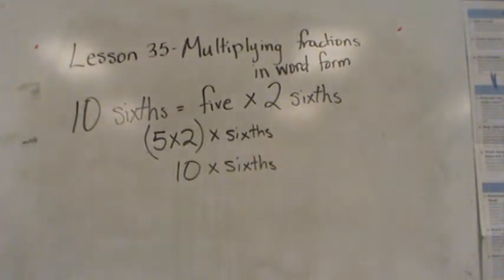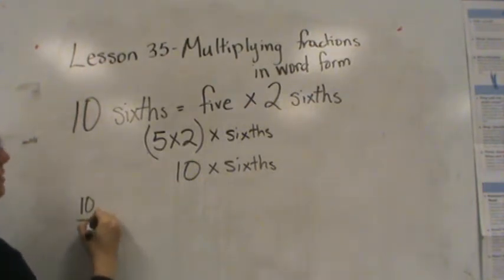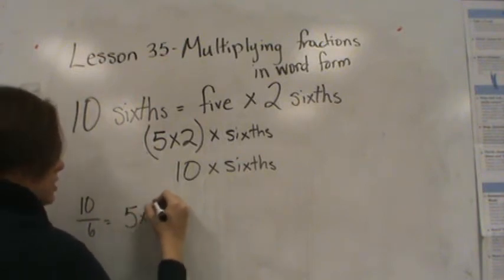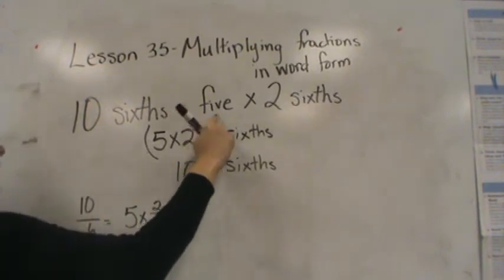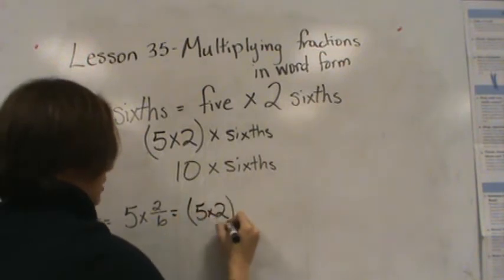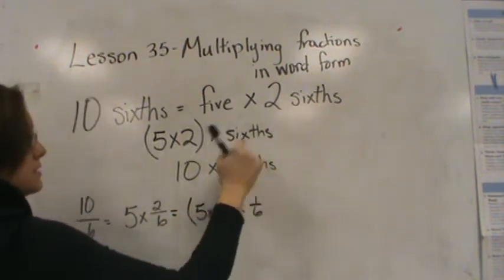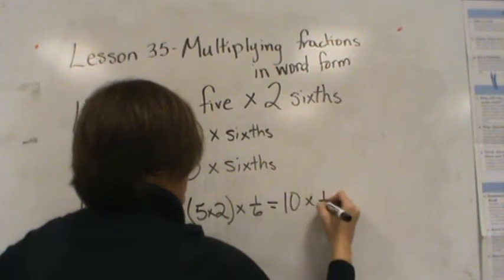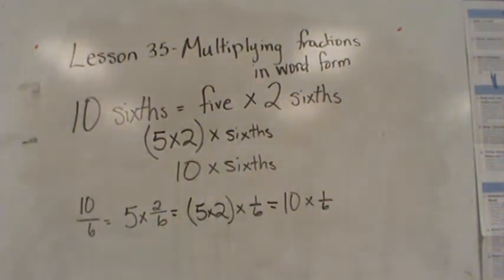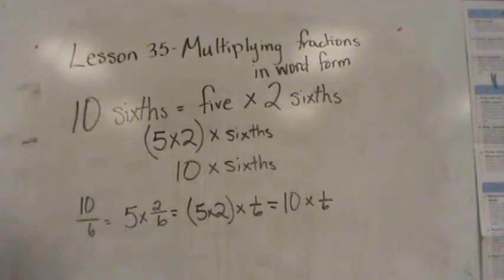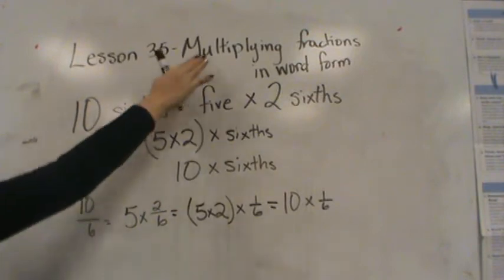Now let's look at that in number form, so these words have a little bit more meaning. It's kind of like saying 10 sixths is equal to 5 times 2 sixths, which is the same as saying 5 times 2 times a sixth, which is also the same as saying 5 times 2 is 10 times a sixth. So 10 sixths — these are all equal ways of representing 10 sixths with a multiplication problem.